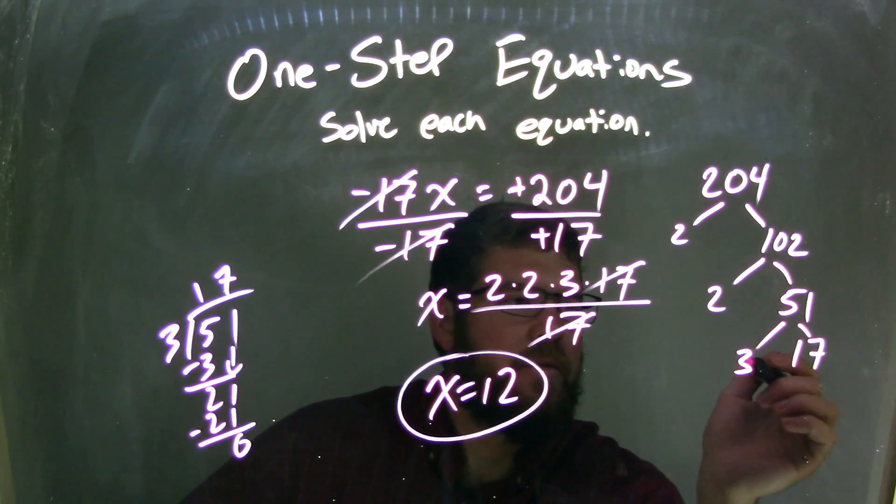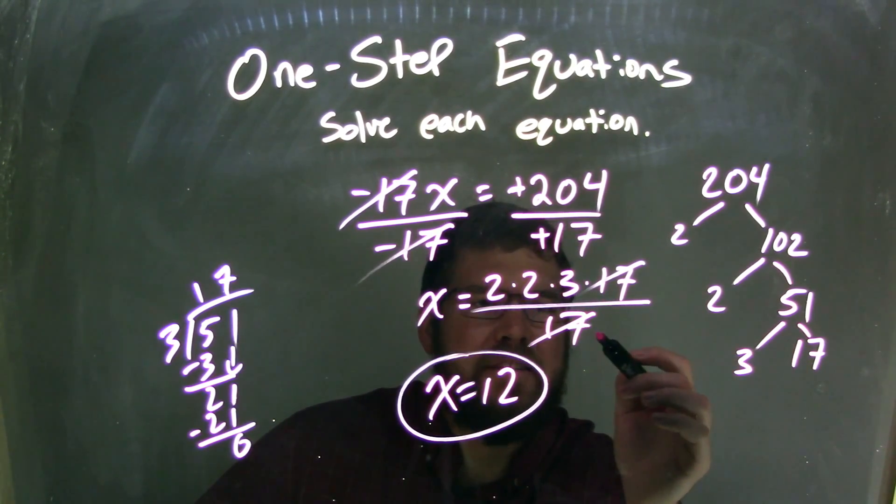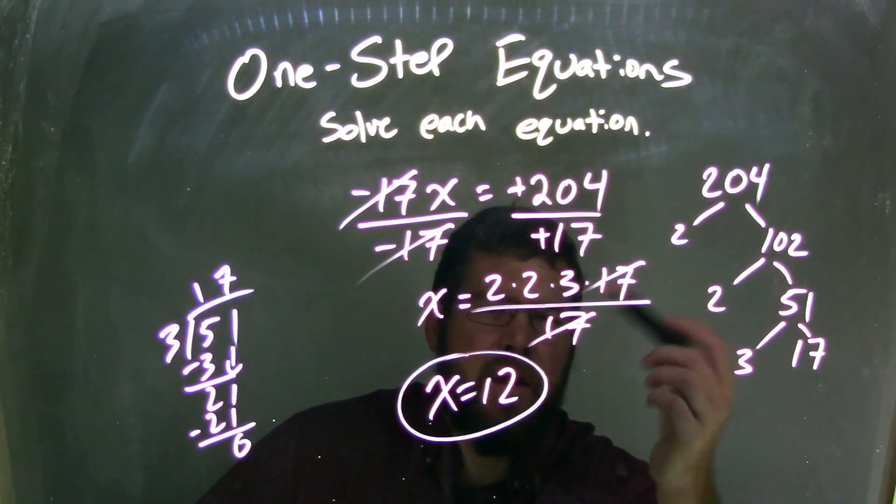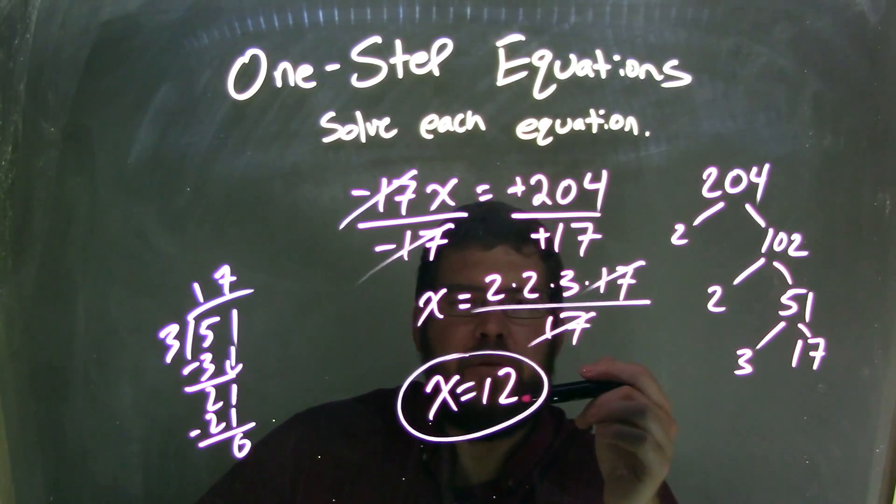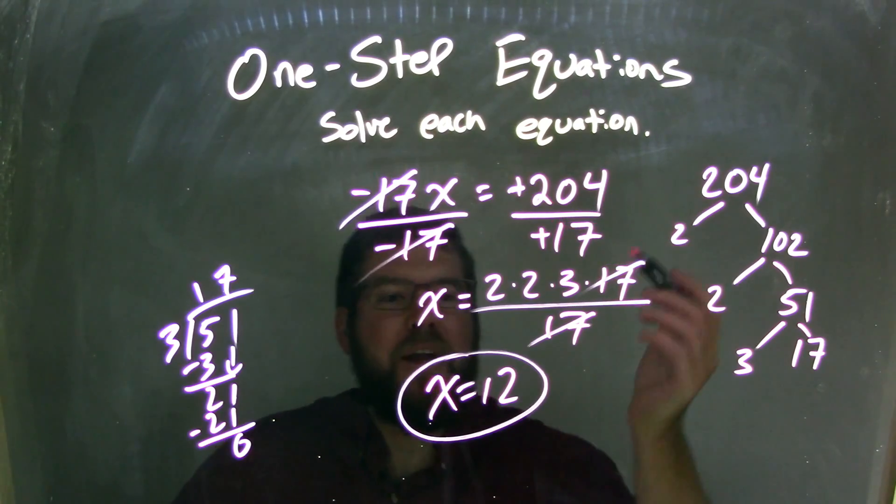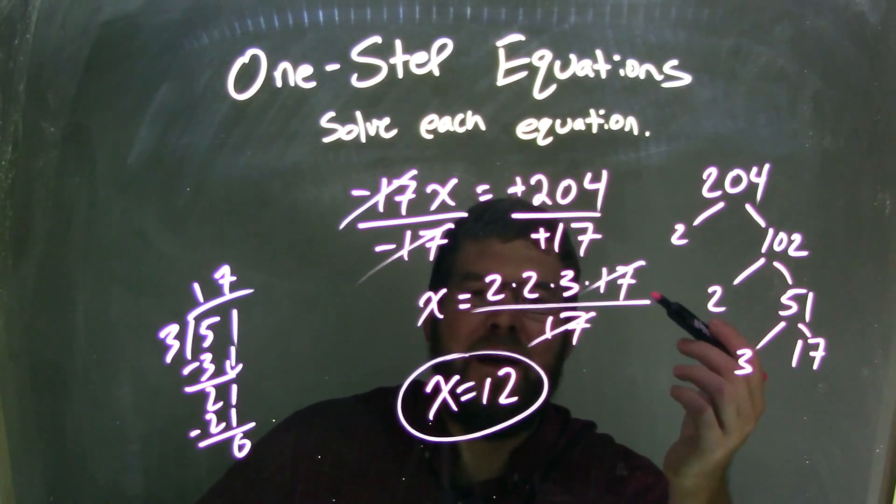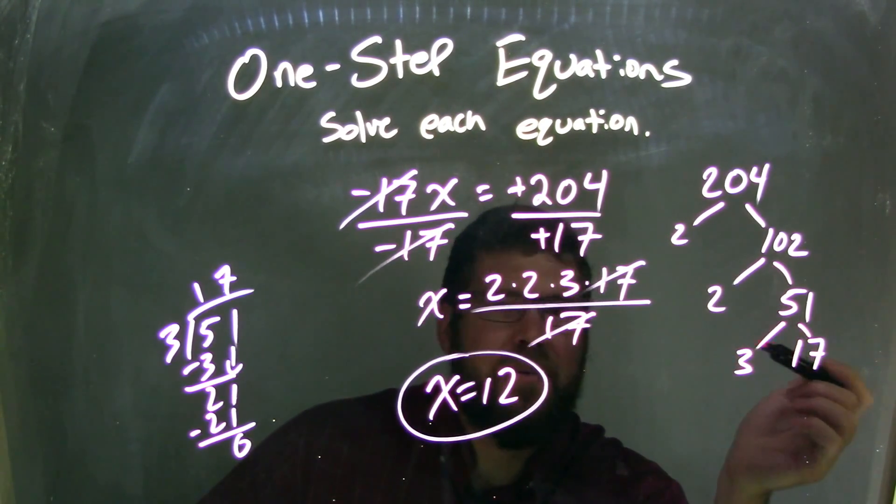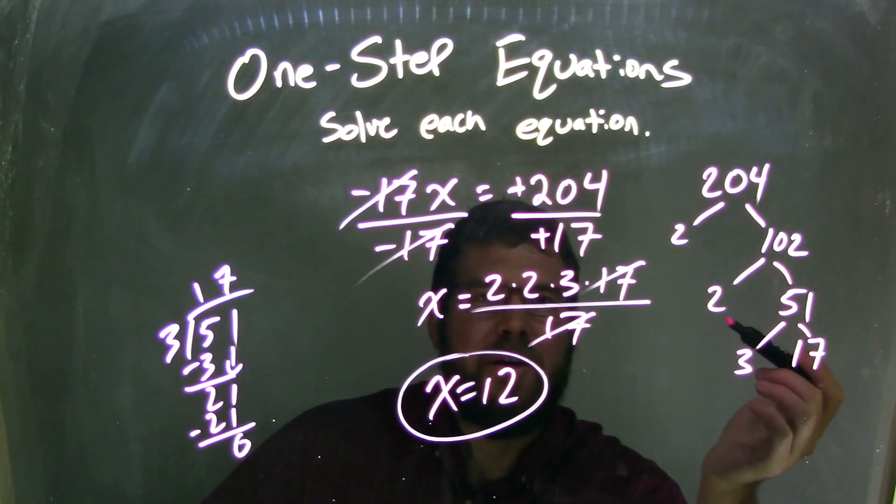And so now we're left with 2 times 2 times 3 times 17, over 17. The 17s cancel, pretty easy, so 2 times 2 times 3 came out to be 12. Now, you could have done long division at this point here, it might have been easier to be honest. But you can see how there's many ways to solve this problem here.